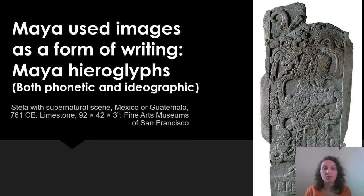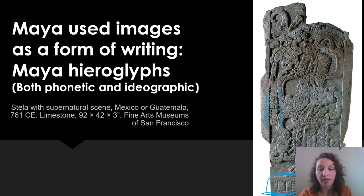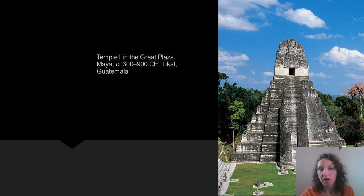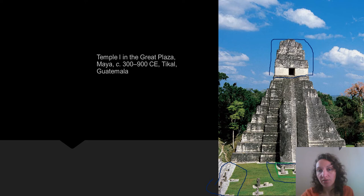The Mayans, similar to the ancient Egyptians, had their own hieroglyphic system — a mix between pictographs and phonetics. You can see their writing going in vertical and horizontal formats here. This is a stella — we've seen many stellas in this class before. This one has a supernatural scene on it and would have been located near a temple. This is in the Great Plaza in Guatemala, where stellas are positioned all around the area.